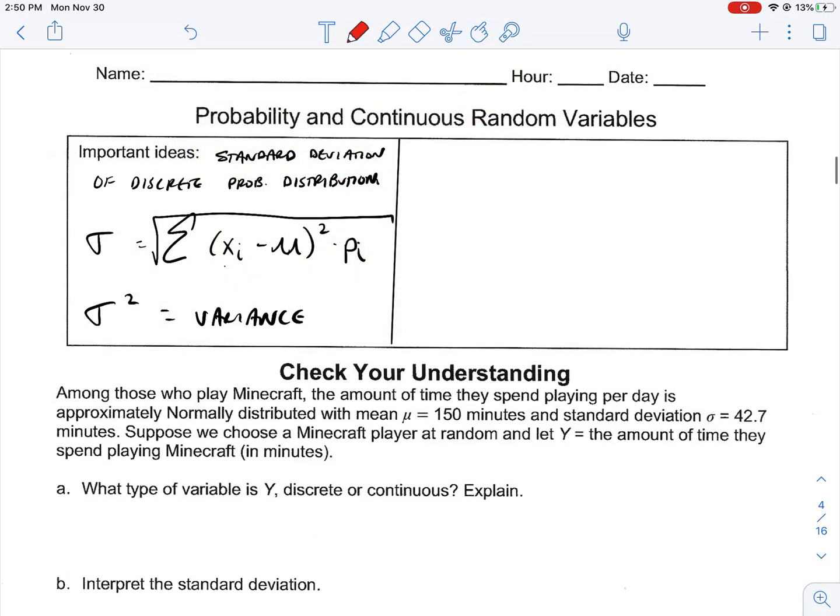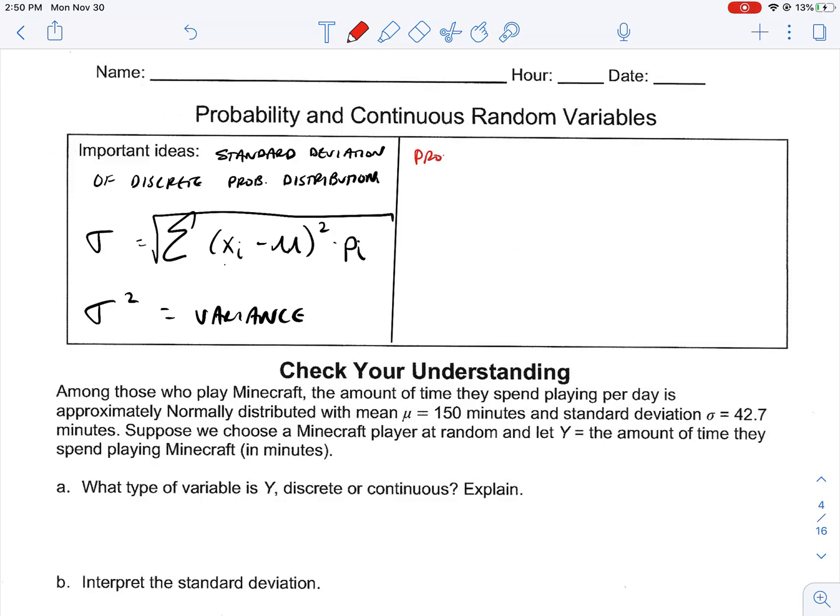We use that as a jumping off point to talk about probability for continuous random variables. So, when we talk about the probability of continuous random variables, we're going back to a time earlier this year, earlier in this course, where we found the area under a curve.